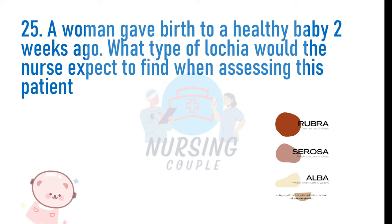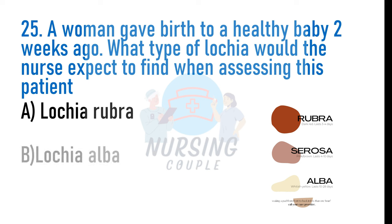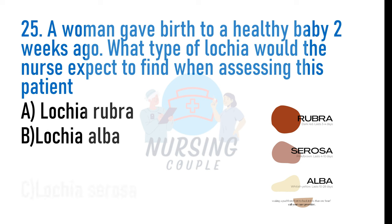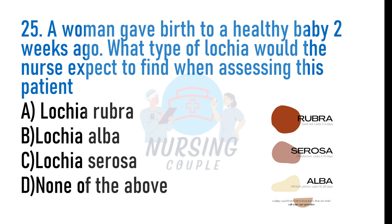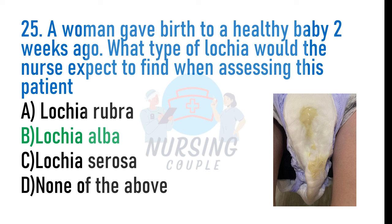A woman gave birth to a healthy baby two weeks ago. What type of lochia would the nurse expect to find when assessing this patient? A. Lochia rubra, B. Lochia alba, C. Lochia serosa, D. None of the above. The answer is B: Lochia alba. Lochia alba is the last stage of lochia — a whitish discharge with little to no blood, light flow or spotting — and it lasts from 12 days to 6 weeks postpartum.